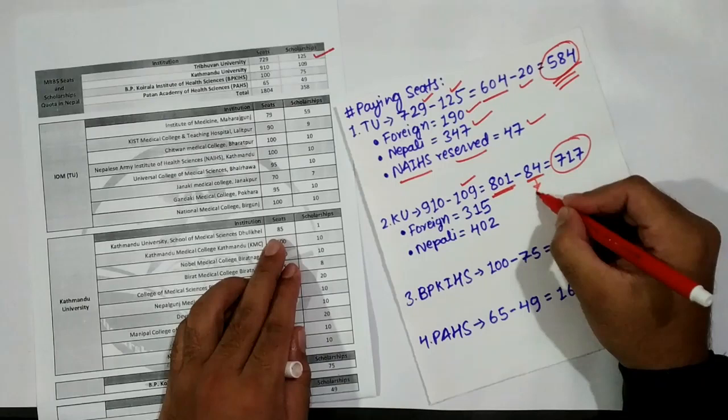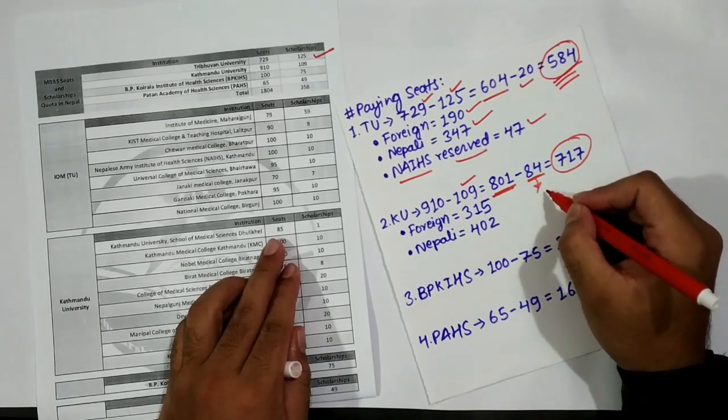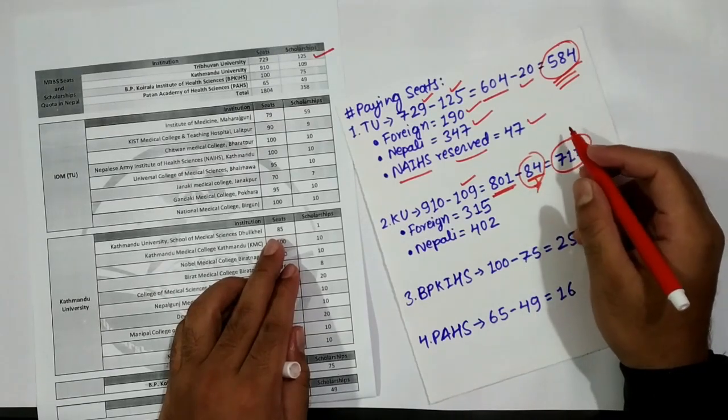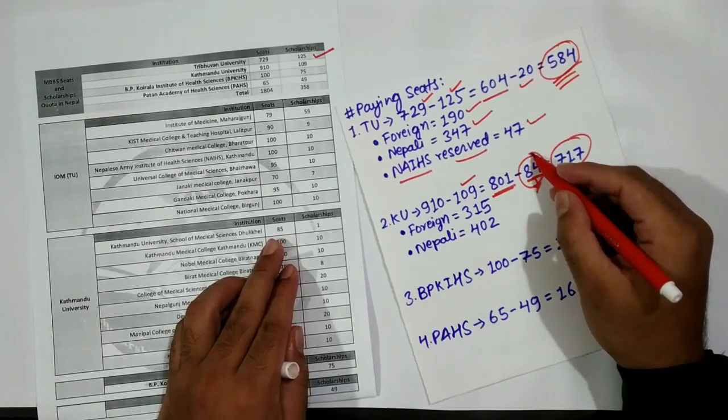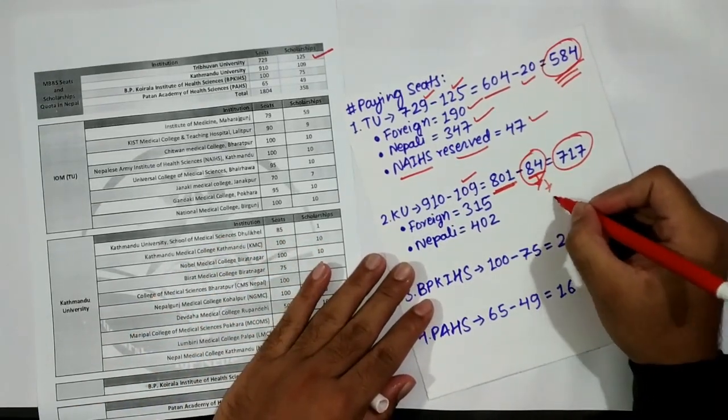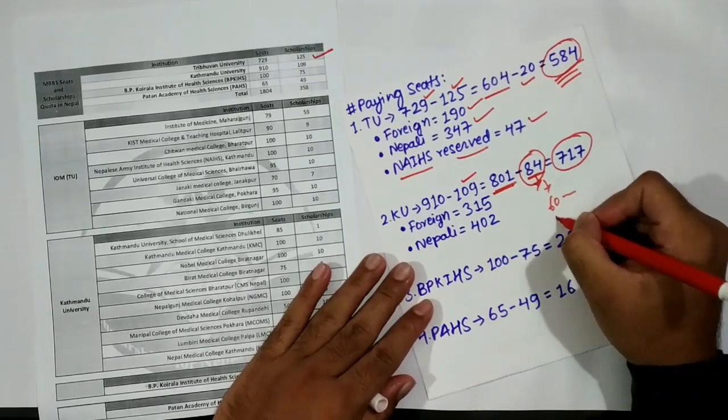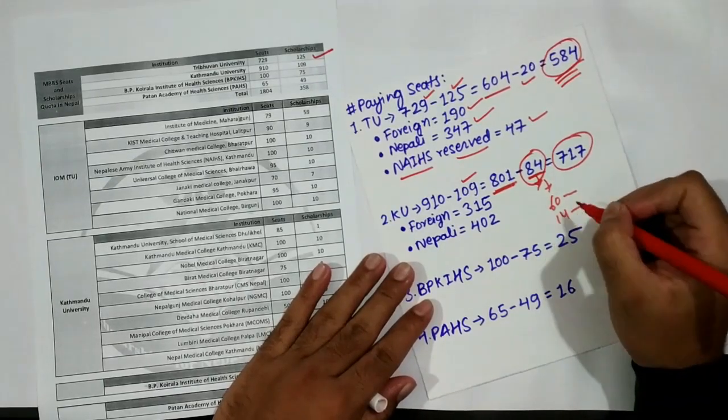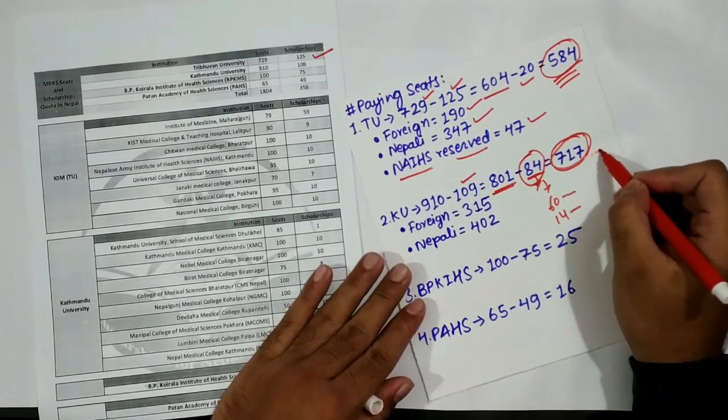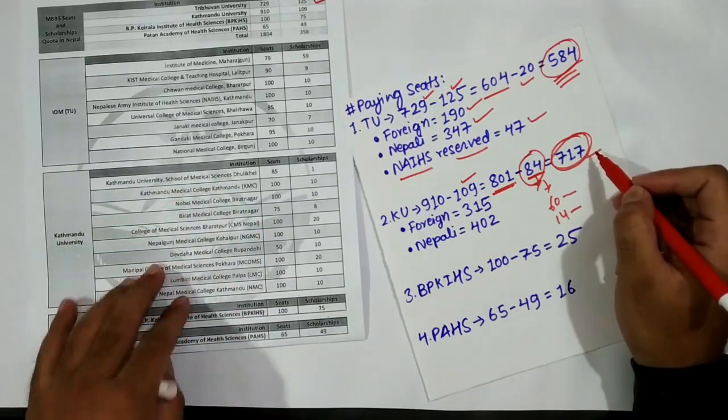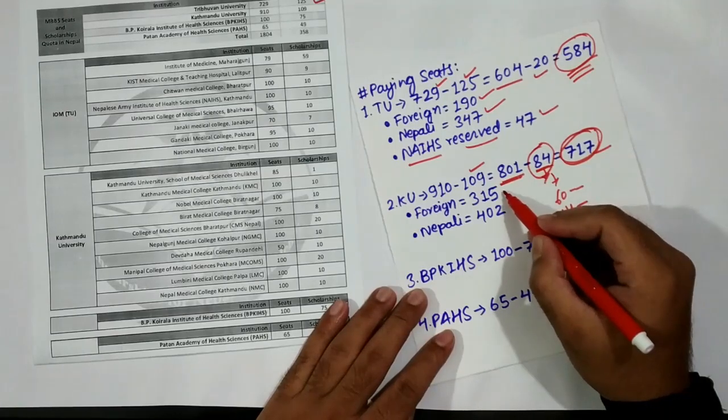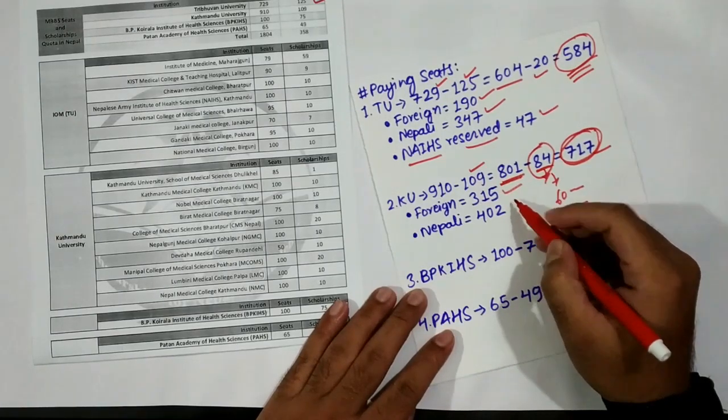Now this 84 number is kind of controversial. Will this 84 be provided to all Nepalese, or will some foreign students also be involved? As per unofficial information, 60 seats will be given to Nepalese and 14 seats to the foreign category. From the 717 seats in the remaining 9 campuses, foreign seats will be 315 and Nepalese seats 402.